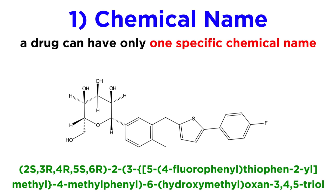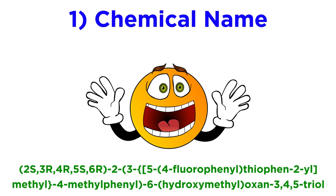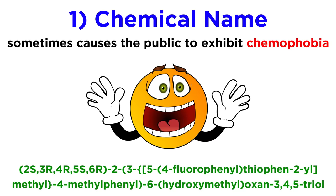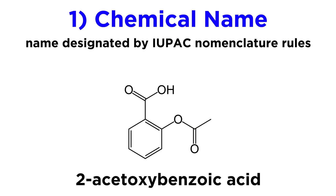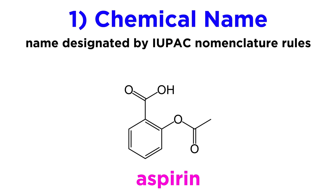Because of the way these names are derived, they tend to be chemically sounding, which causes many sectors of the public to recoil, strictly due to chemophobia, which is an irrational fear of chemicals and chemical sounding things. For example, this drug is called 2-acetoxybenzoic acid. X's and Z's are particularly scary sounding, as is the word acid, so some people may presume that this is a harmful chemical. However, in the United States, this drug is more commonly known by its generic name: aspirin.